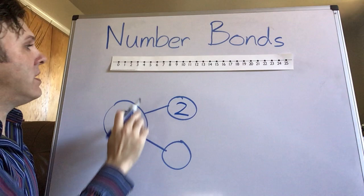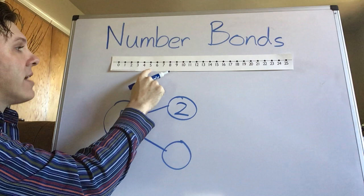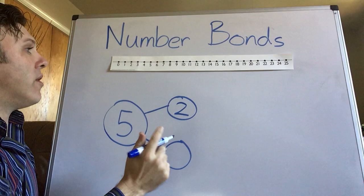So if I look at my number line up here and I start at number five and I go back two spots one two I end up with number three.